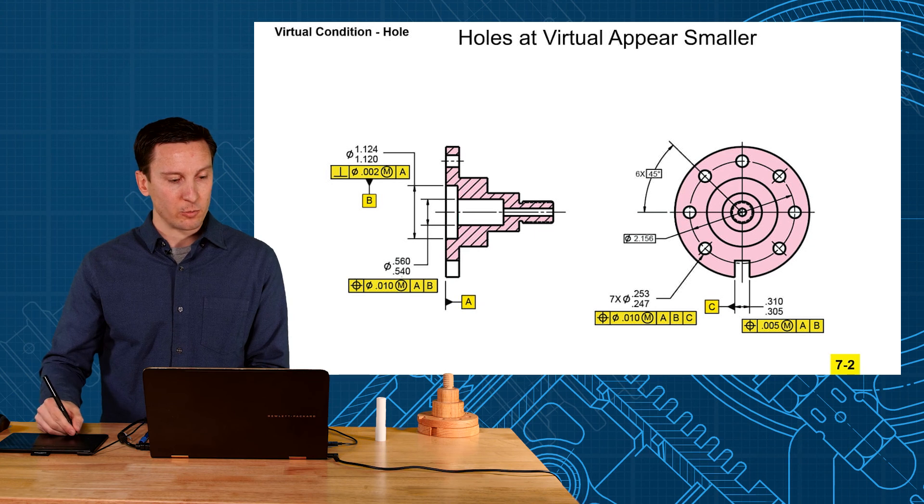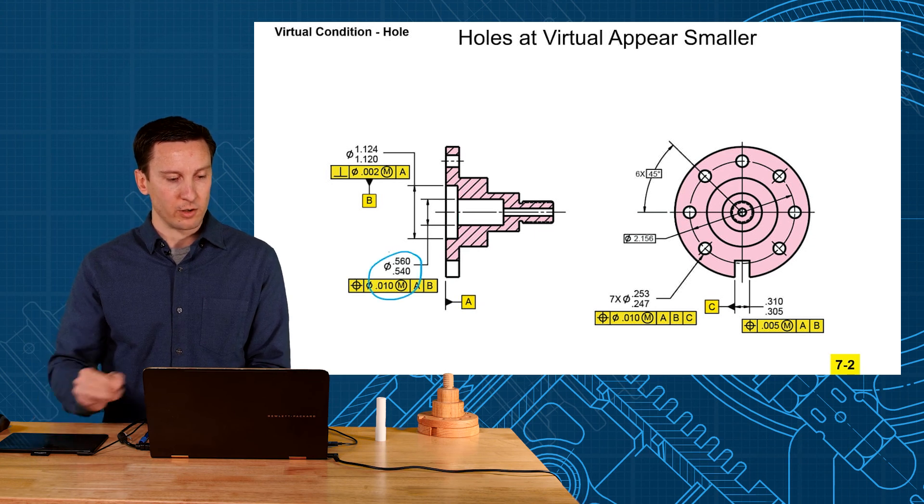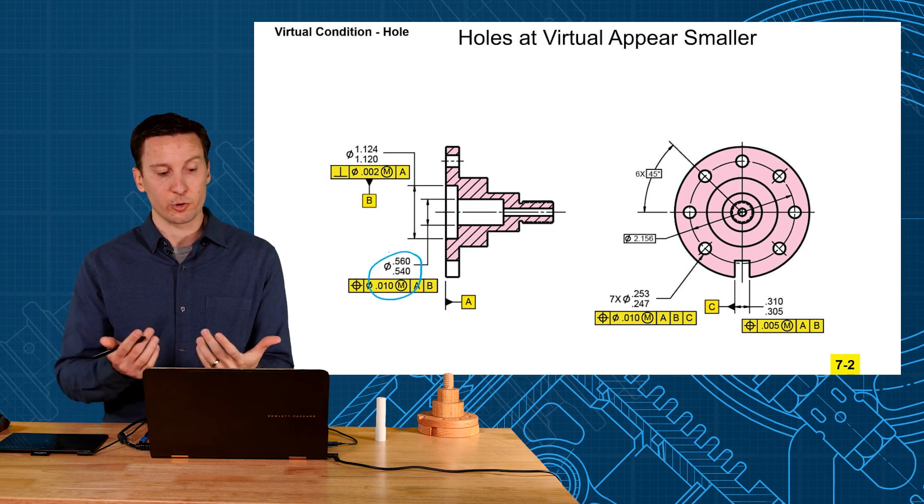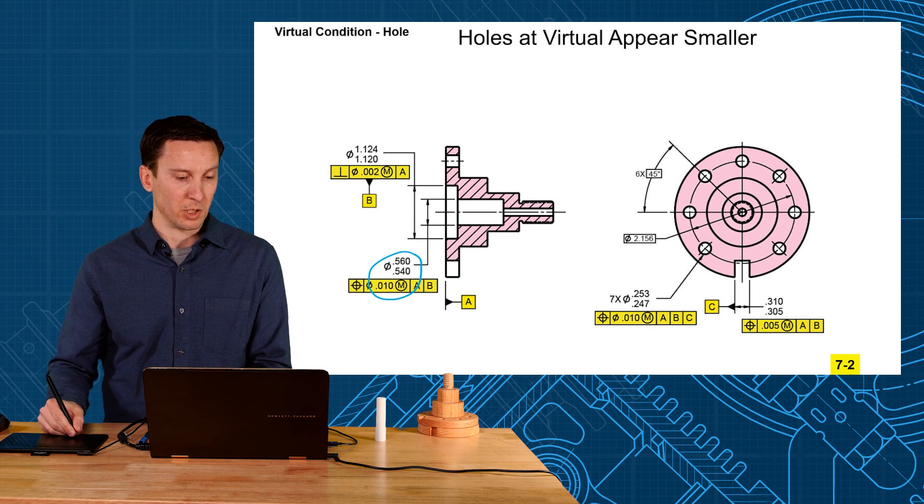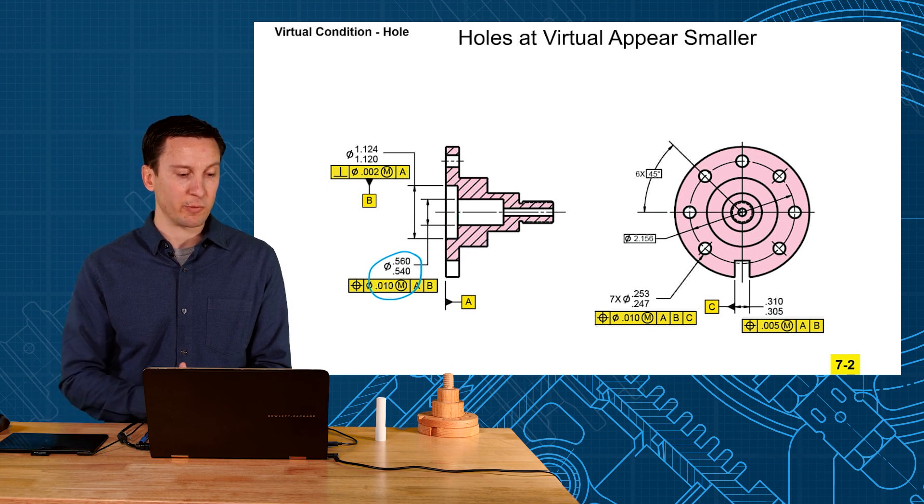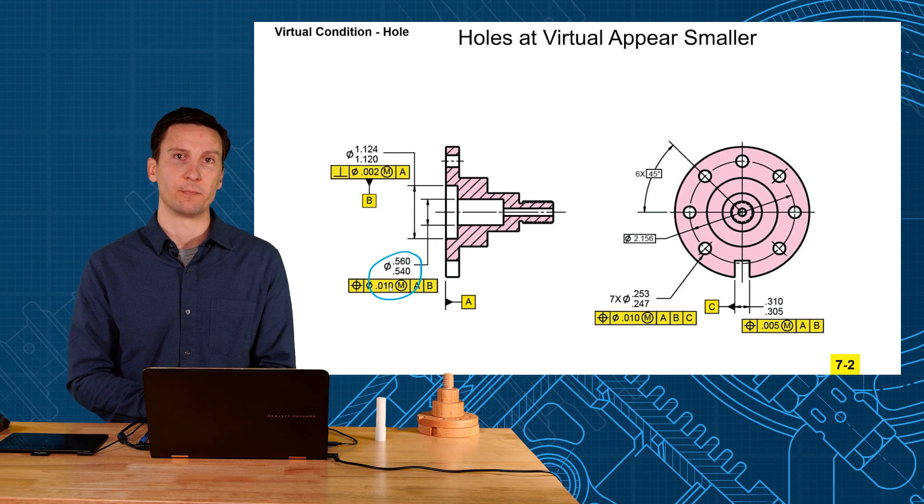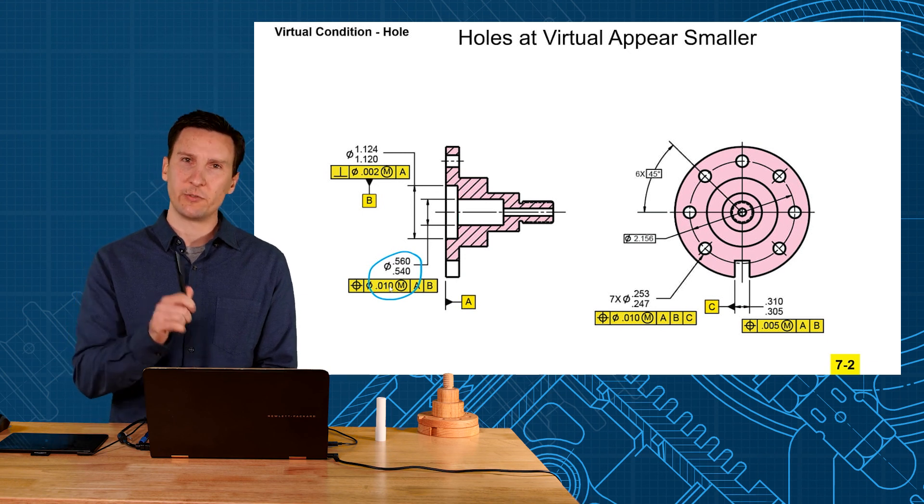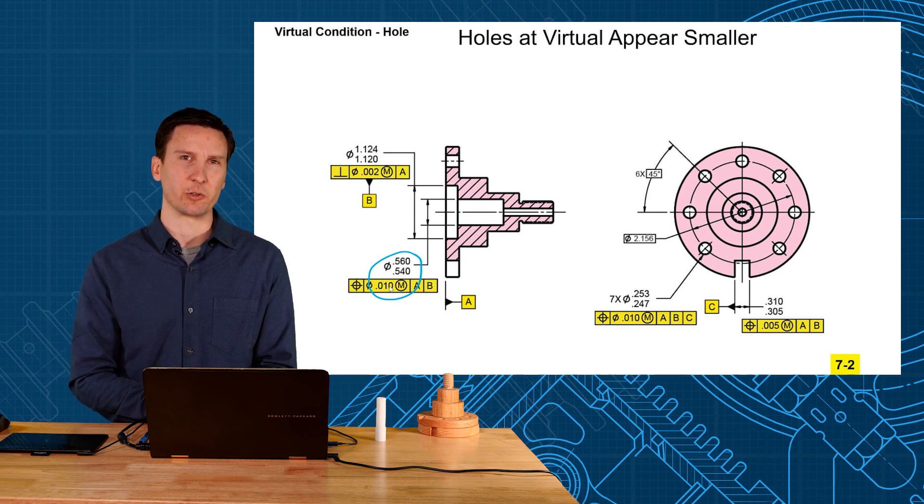So we could do this with any of the other ones as well. If you took another hole here that's not a datum feature and said, what's the virtual condition? Oh, pretty easy. Take your smallest hole minus the geometric tolerance, that should give you a virtual condition of 530. Well, next video we'll look at how a pin works with virtual condition.